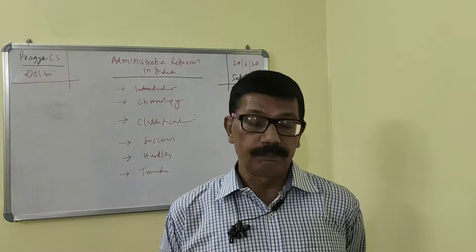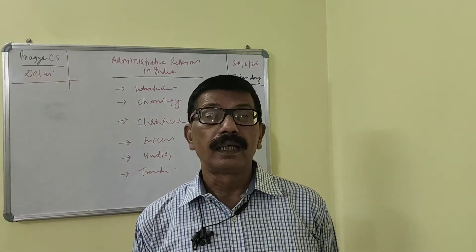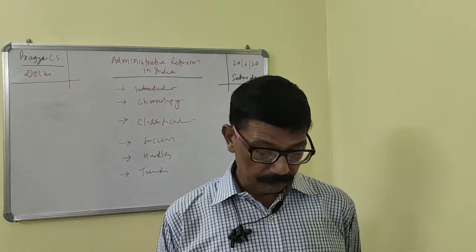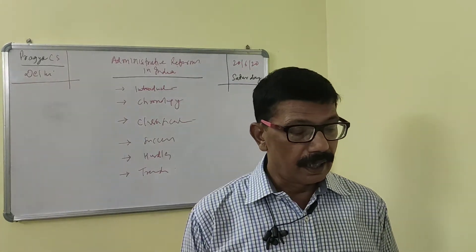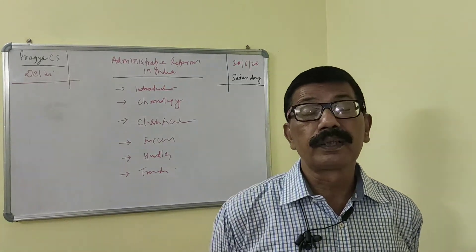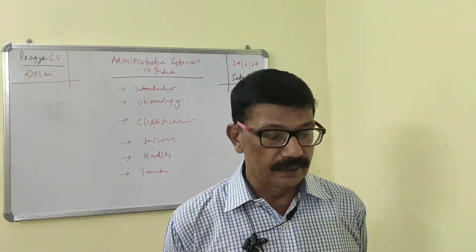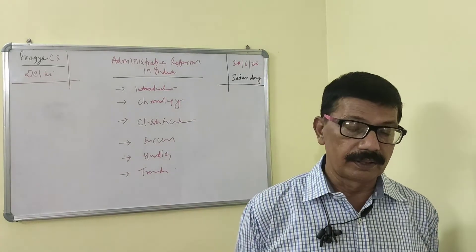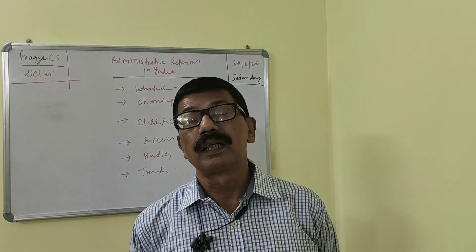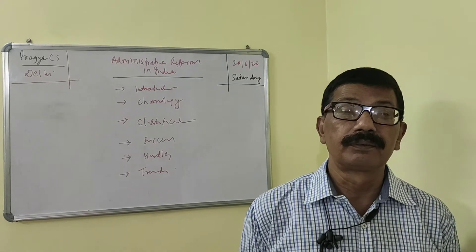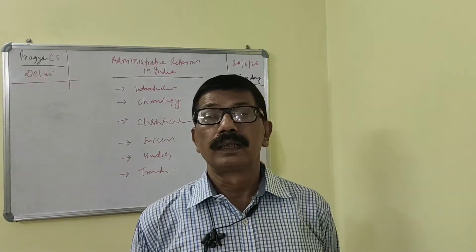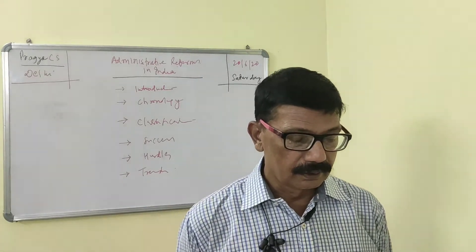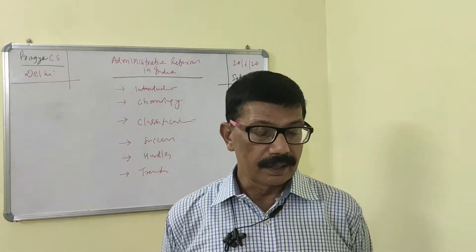In 1973, the Third Pay Commission under Raghavendra Dayal was constituted. In 1975, L.P. Singh gave recommendations on improving efficiency in administration. In 1976, D.S. Kothari Committee was constituted on civil service exams; on its recommendation, a preliminary examination was introduced along with a uniform combined civil service exam. In 1978, Ashok Mehta Committee on Panchayati Raj recommended a two-tier Panchayati Raj institution and introduction of social audit. However, since the government changed, its recommendations were not given serious consideration.